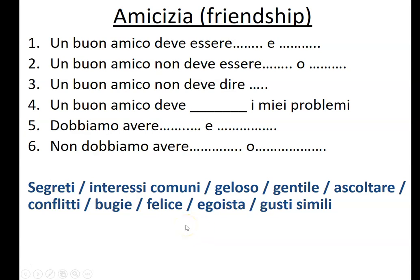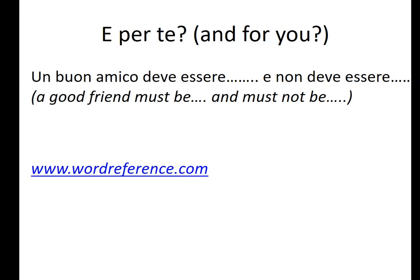Tutto chiaro - everything's clear? E per te - and what about for you? Un buon amico deve essere e non deve essere - and you can add opinion phrases like secondo me, meaning in my opinion, o penso che, I think that, or per me. What do you think a good friend should be like? I've put a link here to wordreference.com - it works much better than Google Translate. Be creative, find things that you want to say rather than just the things I've given you. Come up with phrases for what a good friend must be like and must not be like - and don't just come up with one adjective for each option.